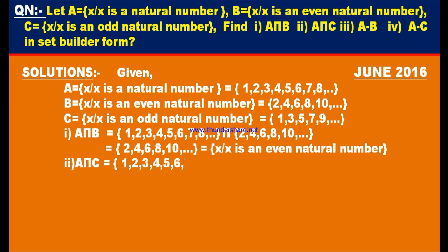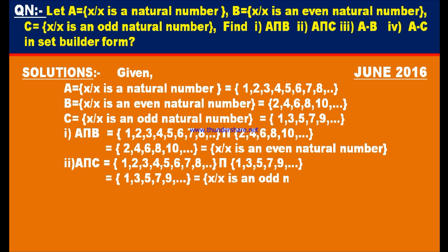Second bit: A intersection C. A = {1, 2, 3, 4, 5, 6, 7, 8, ...} intersection C = {1, 3, 5, 7, 9, ...}. The common elements are 1, 3, 5, 7, 9, and so on — these are odd natural numbers. Therefore, A intersection C = {x | x is an odd natural number}.